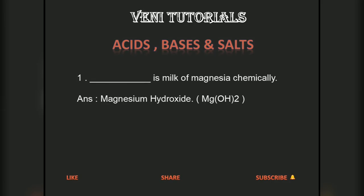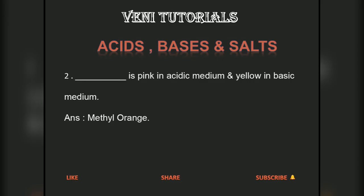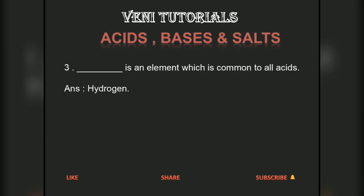Milk of magnesia is chemically known as magnesium hydroxide, Mg(OH)2. Methyl orange is pink in acidic medium and yellow in basic medium. Hydrogen is the element which is common to all acids.